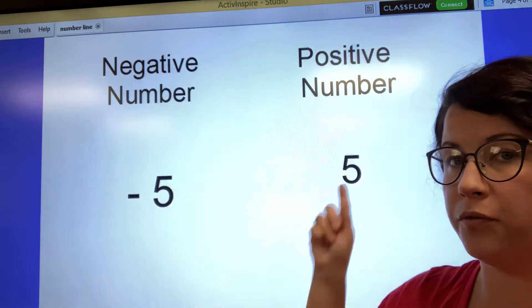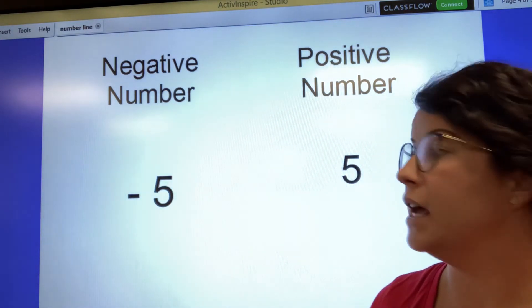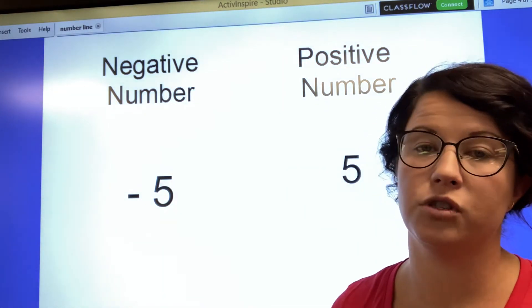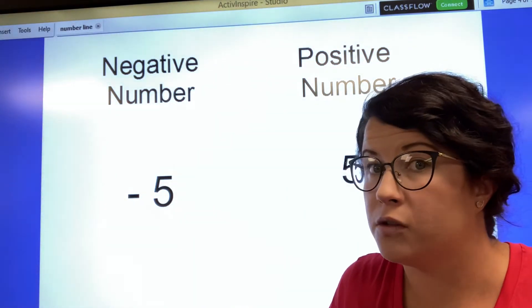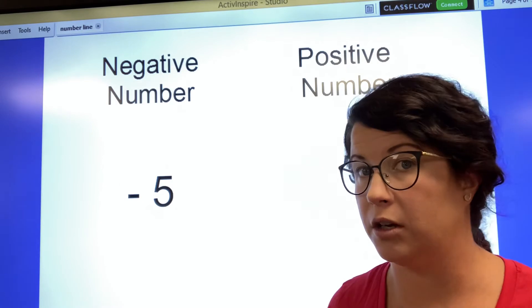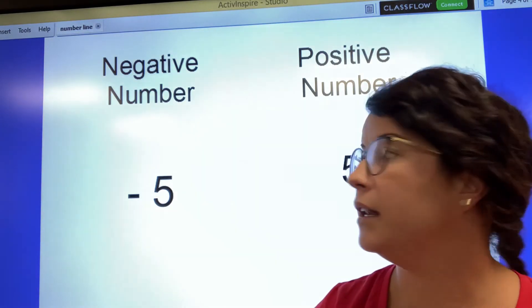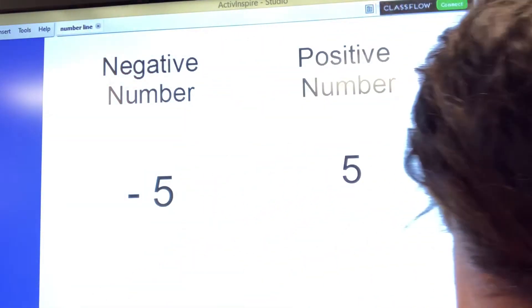If you had 5 Cheerios, you'd be positive 5 Cheerios. If you ate all 5 of those Cheerios, you'd be negative 5 Cheerios because now they're in your belly, and you don't have them in your hand anymore. So you have positive and negative numbers here.